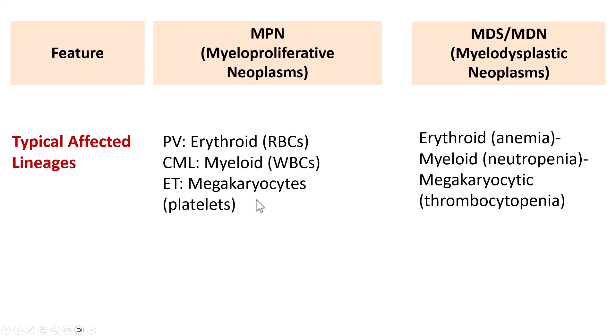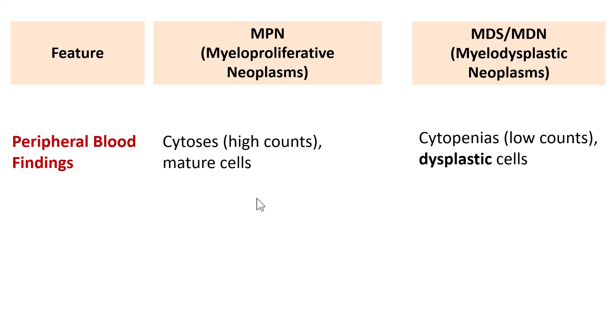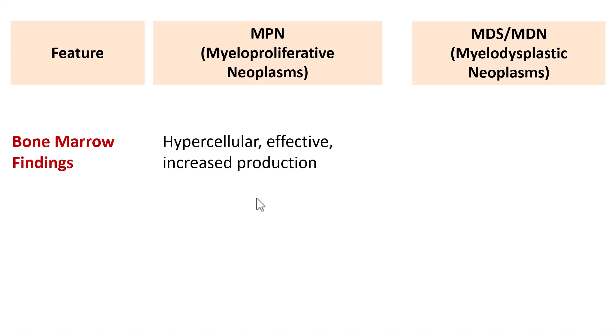In Myeloproliferative Neoplasms, peripheral blood findings always show cytosis — high cell counts — and they are all mature cells. Whereas in Myelodysplastic Neoplasms, there are cytopenias, meaning low cell counts, and by definition there should be dysplastic cells. Bone marrow in MPN is hypercellular with effective hematopoiesis — increased production due to mutations. In MDS, bone marrow is also hypercellular but the hematopoiesis is ineffective.